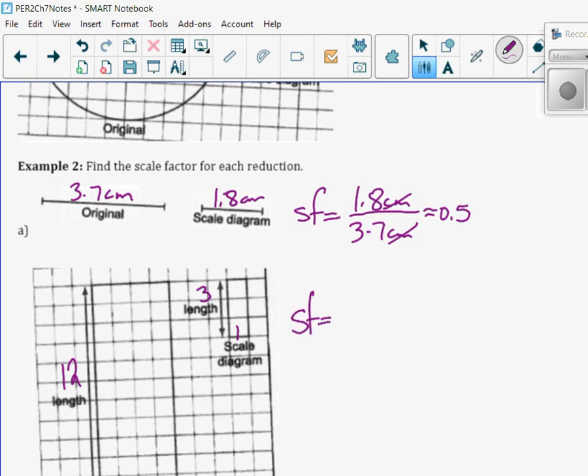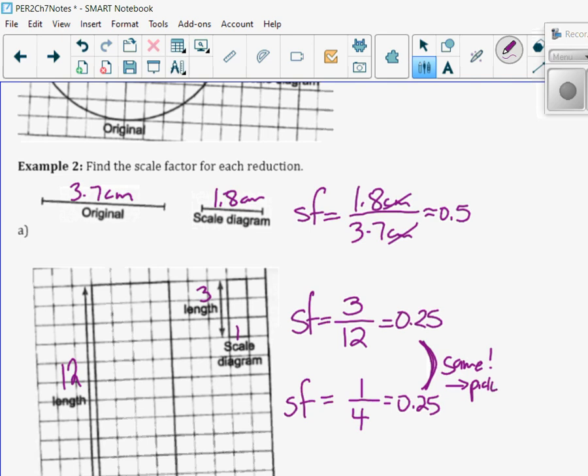I'm going to just prove it to you by doing both. So I'm going to take the reduction, which is 3 squares, and divide by 12 squares, and I get 0.25. And if I take the widths and compare it, I get 1 divided by 4, which gives me 0.25. You don't have to do both. You just pick one. They're both the same. Just pick one dimension to compare.